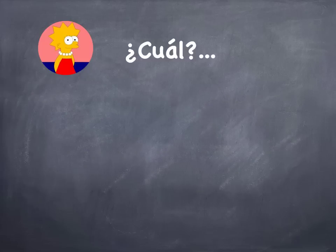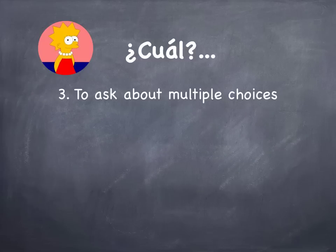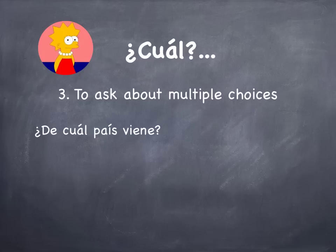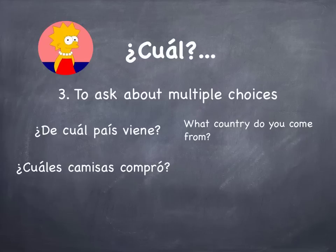The third use of Cuál is to ask about multiple choices, or when there are multiple possible answers for one question. For example, ¿De cuál país viene? — What country do you come from? ¿Cuáles camisas compró? — What shirts did you buy?